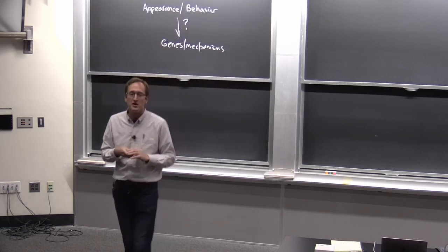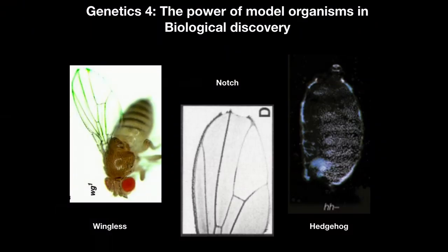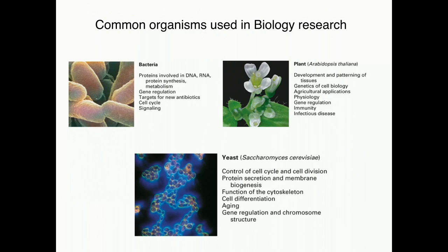On my title slide I have three fruit fly mutant phenotypes. Each of these mutants defined genes that were subsequently found to have homologous genes present in humans and were shown to play important roles in human biology. Later in the lecture I'll explain what each of these phenotypes is. But first, I want to highlight the importance of model organisms and their use in biology.